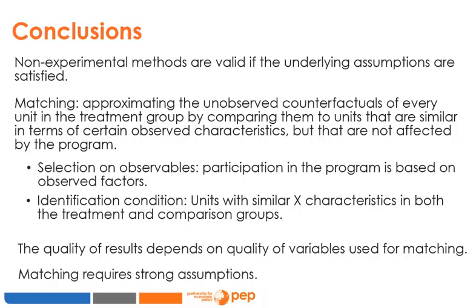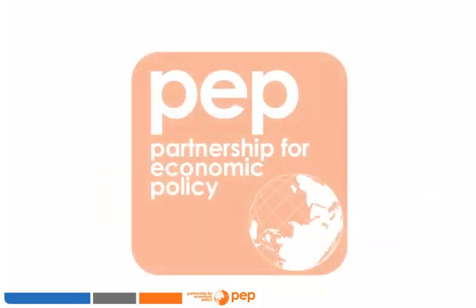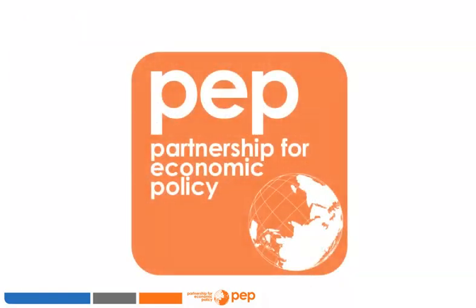The second assumption is the statistical identification condition, which means we need units with similar X characteristics in both the treatment and comparison groups, and that participation in the treatment should not be perfectly determined by the matching variables. The quality of results obtained by the matching method largely depends on the quality of variables used for matching, so it is critical to have a very rich database. Matching is generally less reliable than other evaluation methods; in particular, random selection methods do not rely on the unverifiable assumption of selection on observables, and random assignment requires smaller evaluation samples and fewer observed characteristics than the matching method.